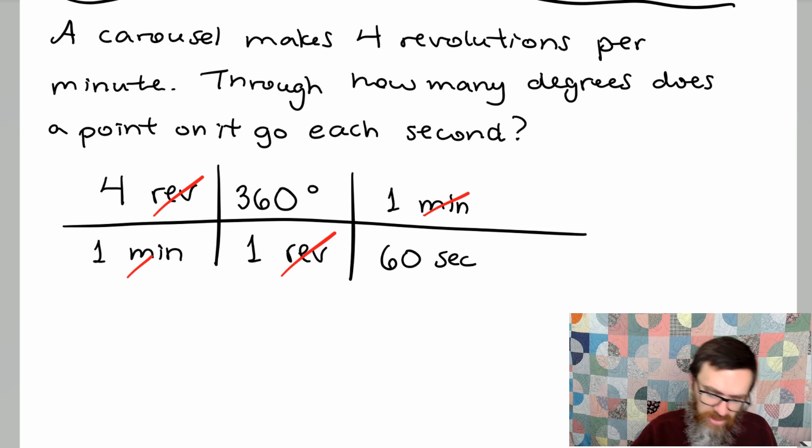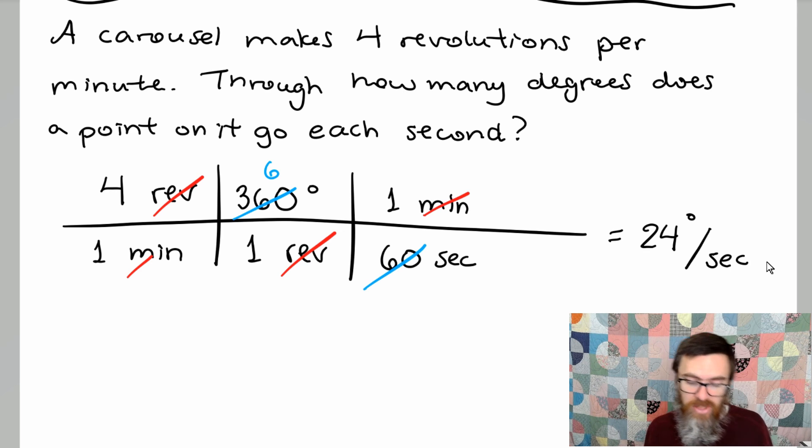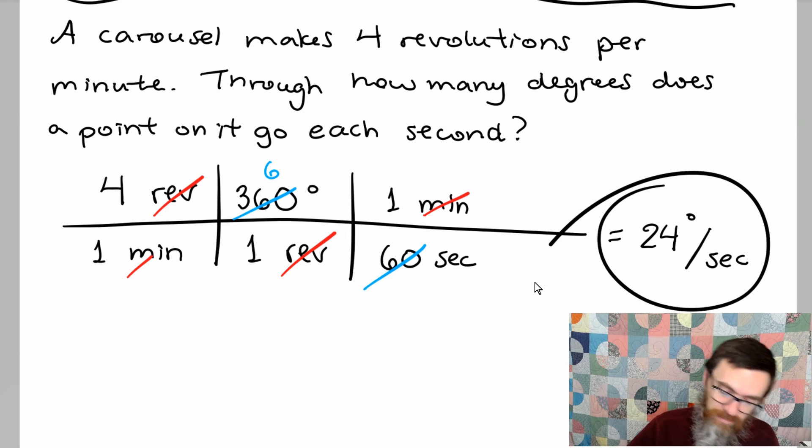Let's see if there's any simplifying I can do. So 60 goes into 360 six times. And that's it. So we end up with 4 times 6 is 24. The units that we have left in the numerator is degrees. And in the denominator we have the unit of seconds. So that means that if you're just standing on the carousel for every second you're going to be going through an arc that's going to map out 24 degrees. There we go.